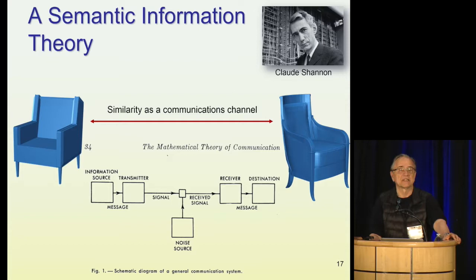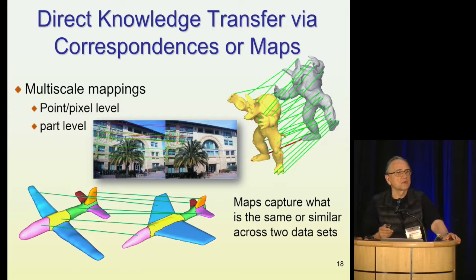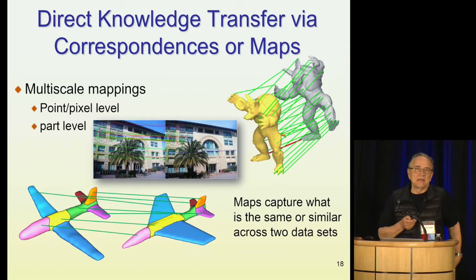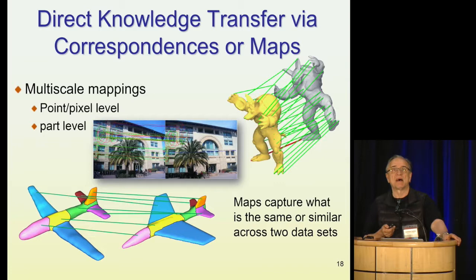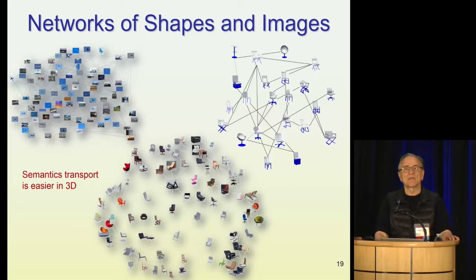The way we build these networks is by establishing maps and correspondences between objects. This can be very detailed — if it's the same object in different poses, we can have a point-to-point map. But most of the time, it's a map at a more abstract level, at a more structural level, at the level of parts. We build these networks that can be used to transport information. We find that networks of 3D models are much easier to deal with because the information is more pure. In images, we have to worry about where the object is in the image and not account for other parts.